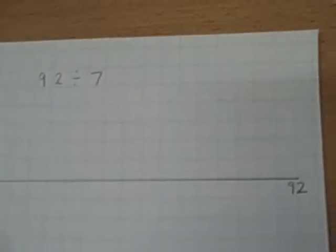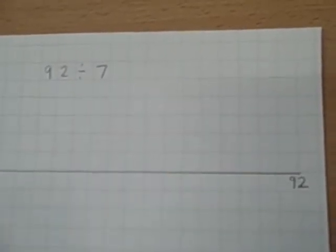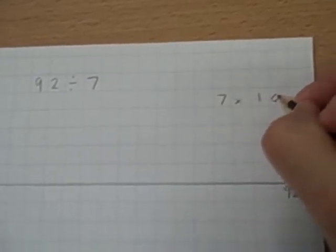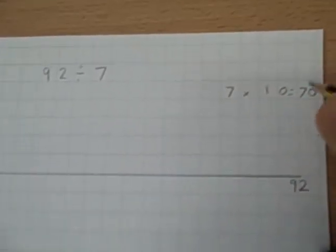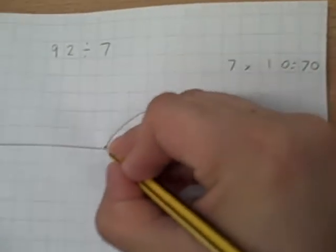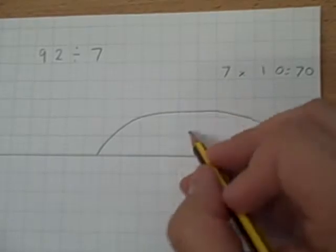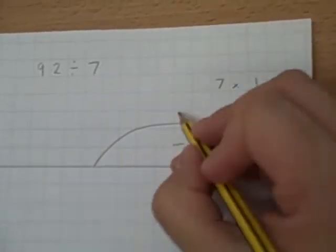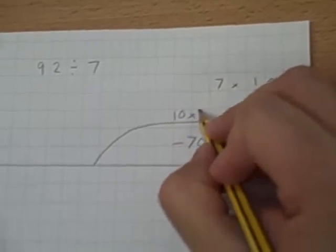Rather than taking away jumps of 7, I know that 7 times 10 equals 70. So I can take away that chunk straight away. So, 92 take away 70, and that was 10 times 7.